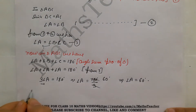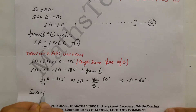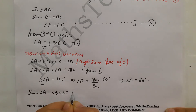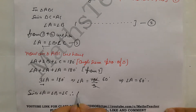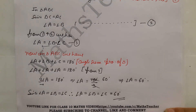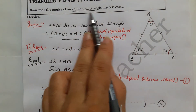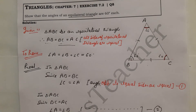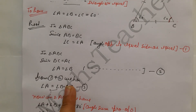Since angle A equals angle B equals angle C, therefore angle B and angle C are also 60 degrees each. Hence we have proved that the angles of an equilateral triangle are 60 degrees each. First we showed that all three angles are equal, and then using the angle sum property we showed each angle is 60 degrees. I hope you have understood the question well.